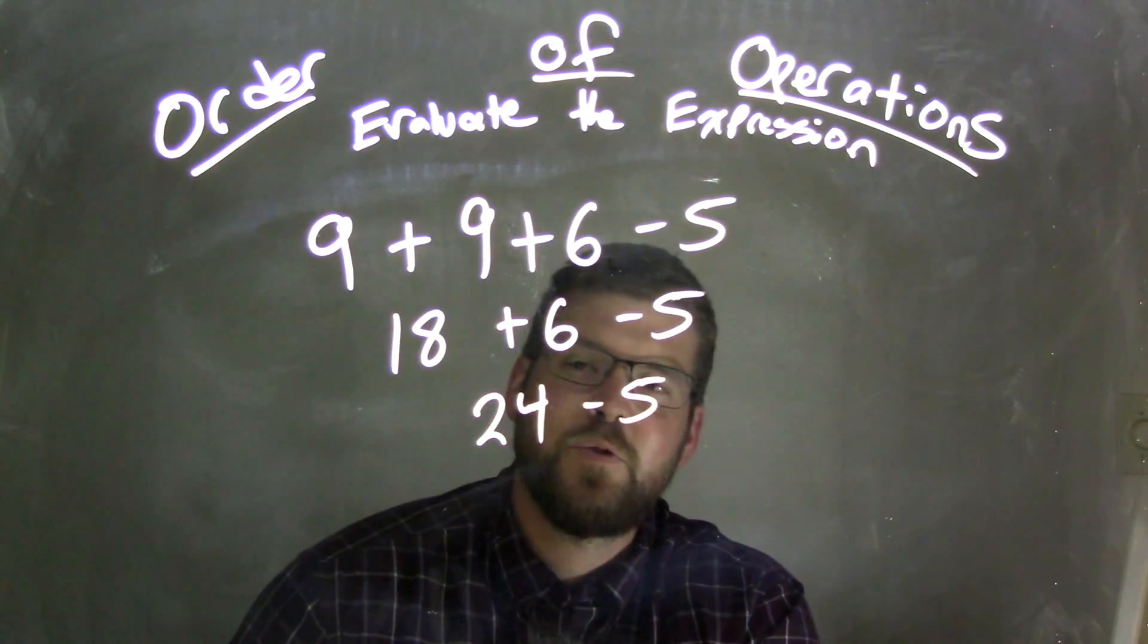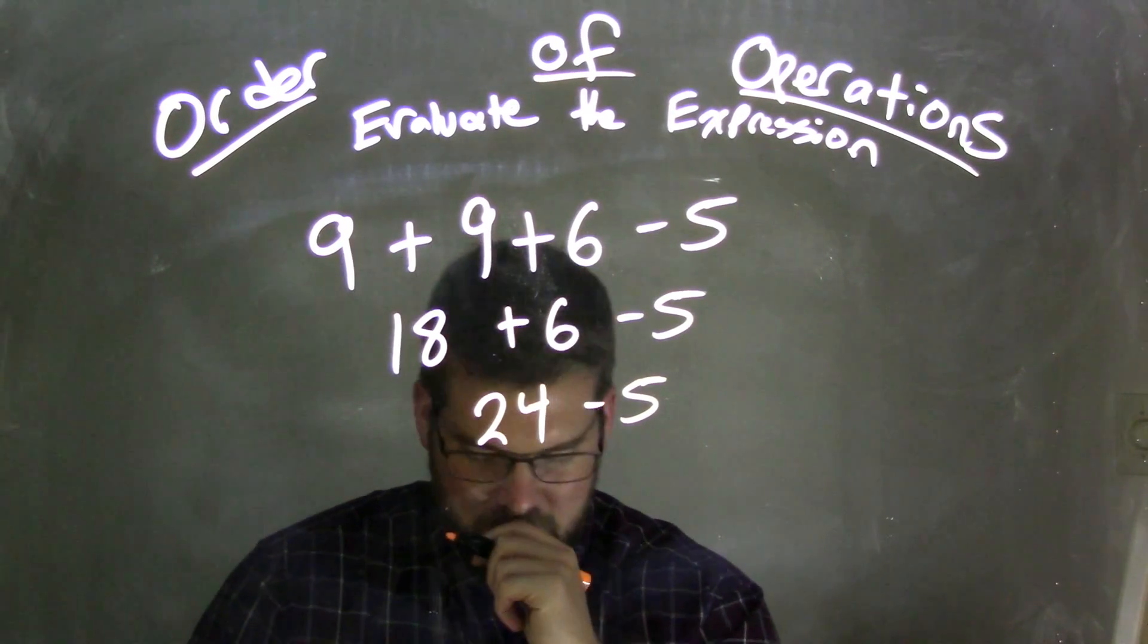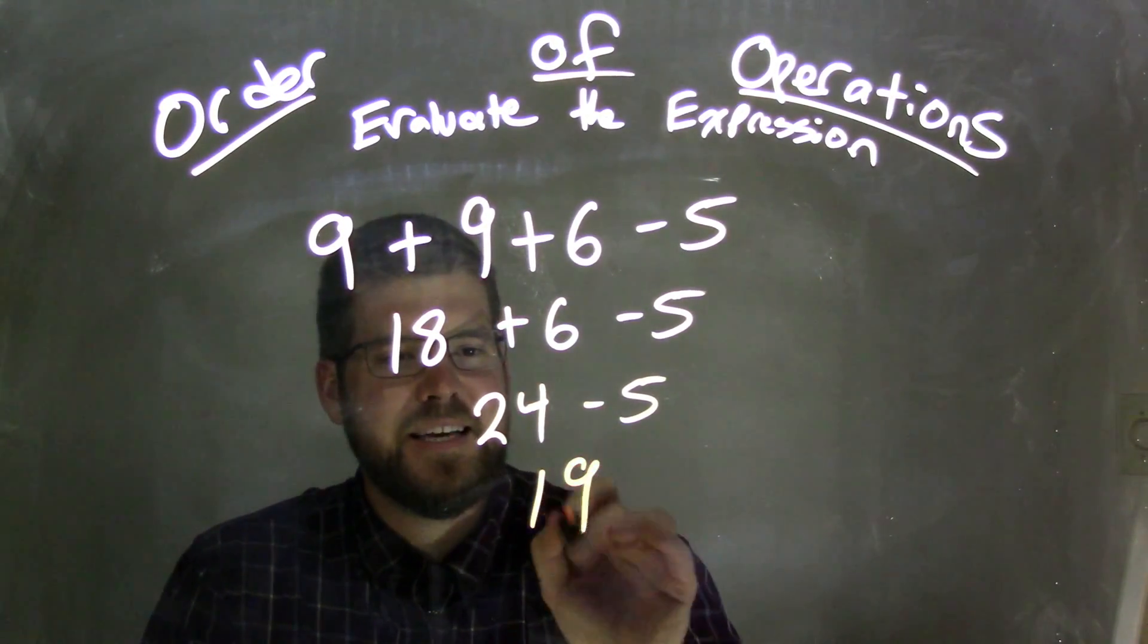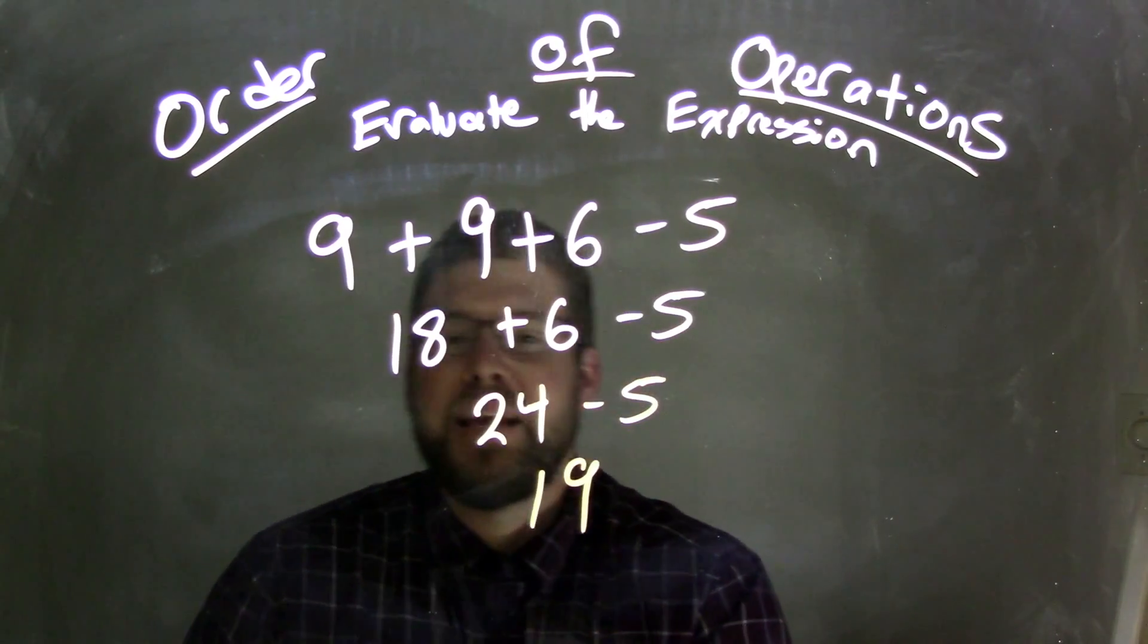So now it was 24 minus 5, well, 24 minus 5 comes out to be 19. And so my final answer here is 19.